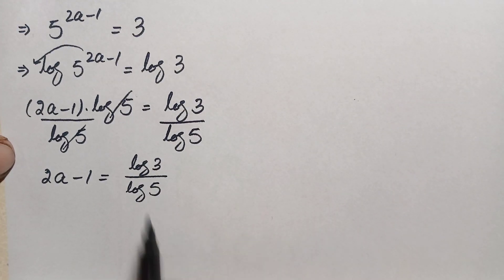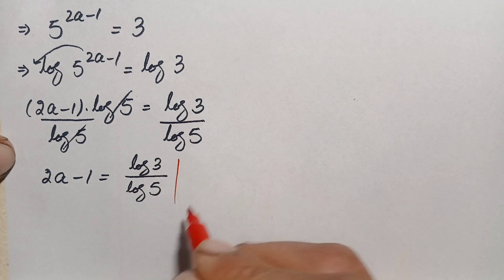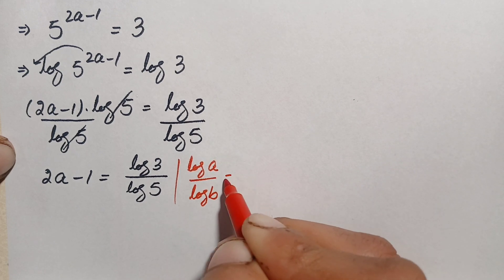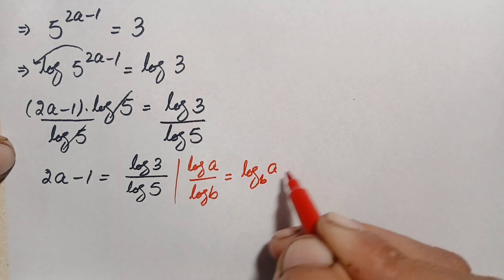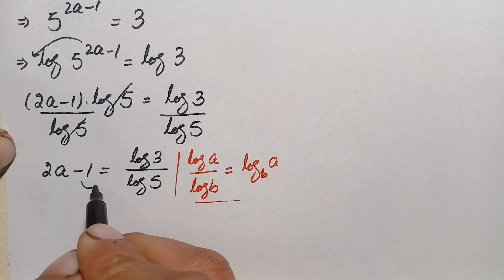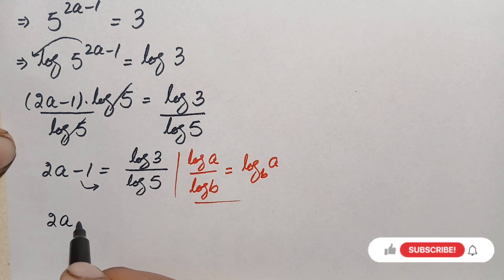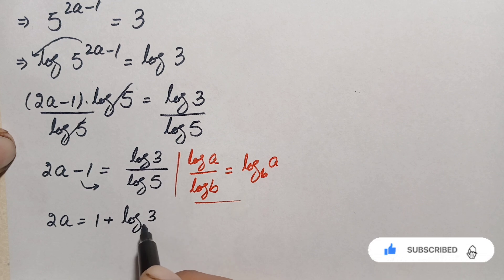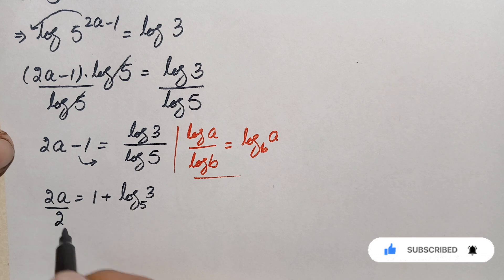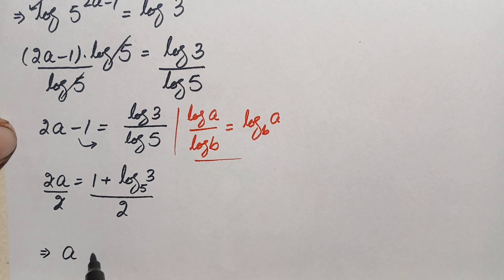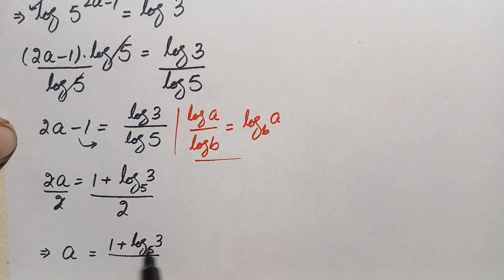On the right hand side we use the change of base logarithm identity: log of a divided by log of b can be written as log of a with base b. So log of 3 divided by log of 5 becomes log base 5 of 3. We move the negative 1 to the right hand side, making it positive 1, giving 2a equals 1 plus log base 5 of 3. Dividing both sides by 2, we get a equals 1 plus log base 5 of 3, all divided by 2.